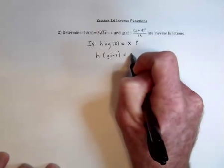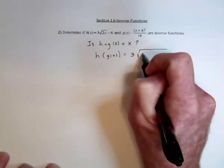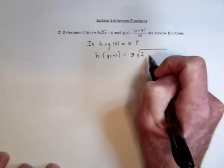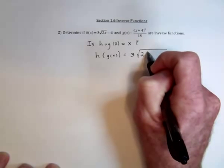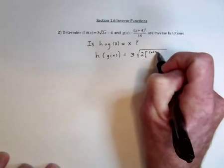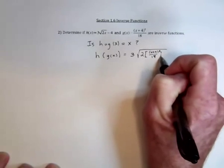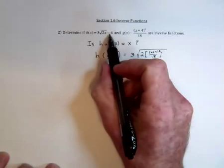So that would look like 3 and then the square root of 2 times the g function, so x plus 4 squared divided by 18, and then at the end, subtract 4.